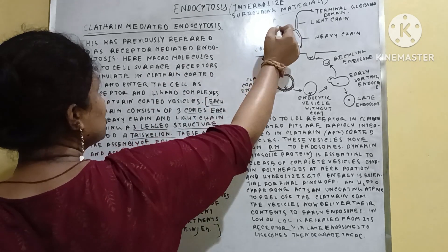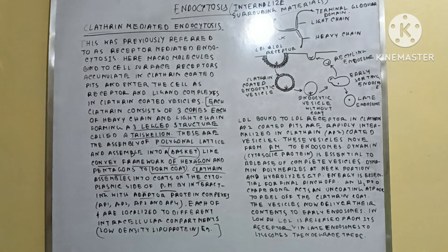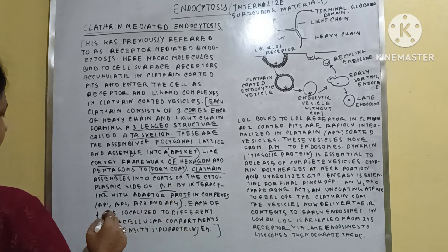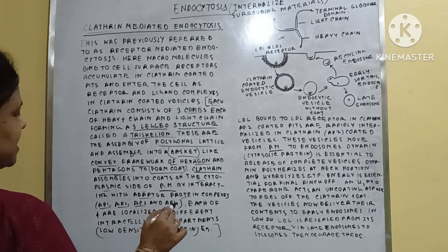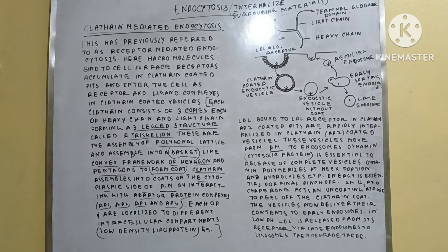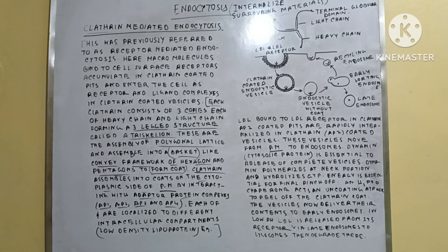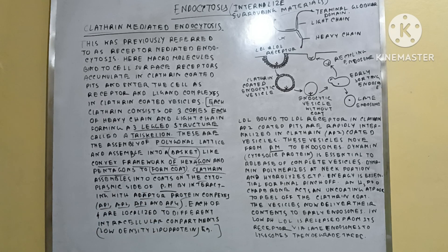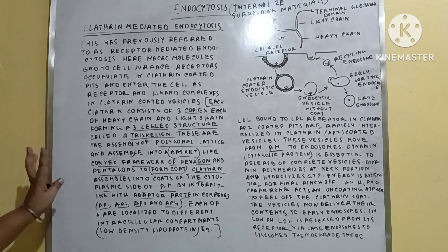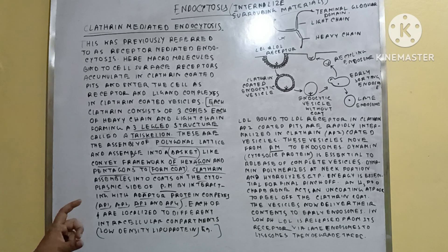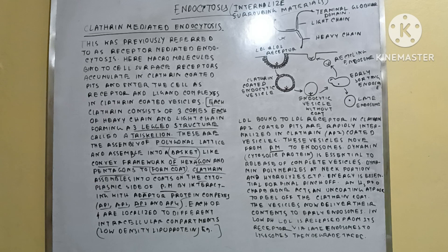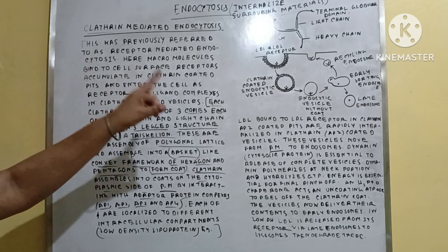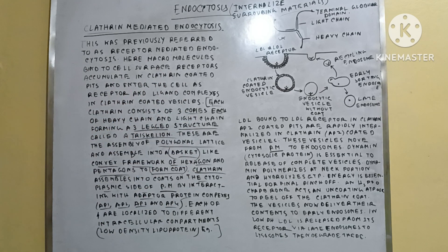Clathrin is attached to the plasma membrane by adaptor protein complexes such as AP1, AP2, AP3, and AP4. Each of these four adaptor proteins is localized to a different intracellular compartment — they do not remain in the same place. This clathrin molecule helps in endocytosis and remains attached to the plasma membrane with the help of these adaptor proteins.